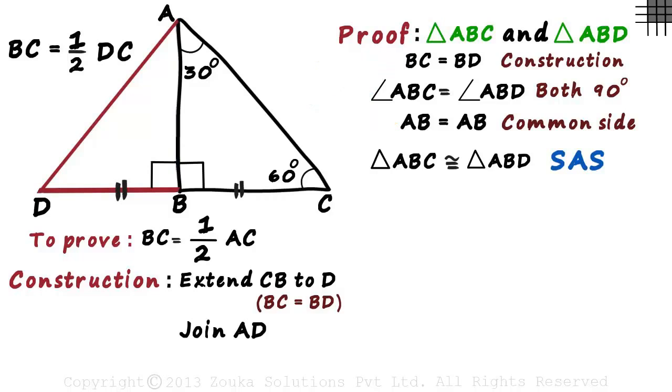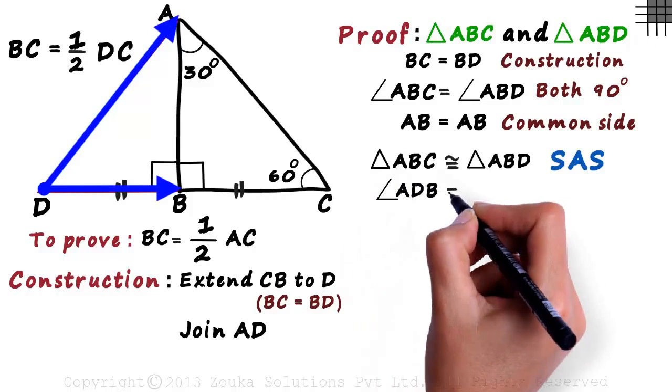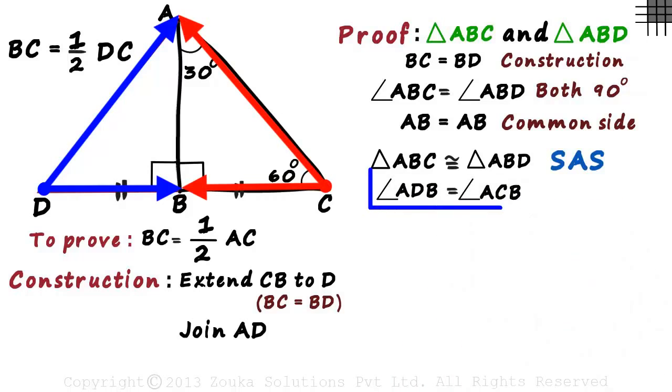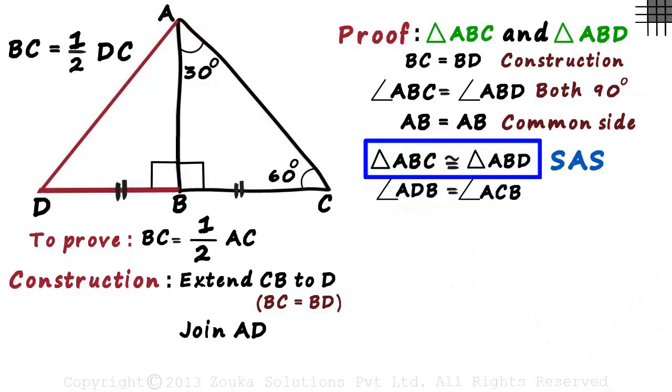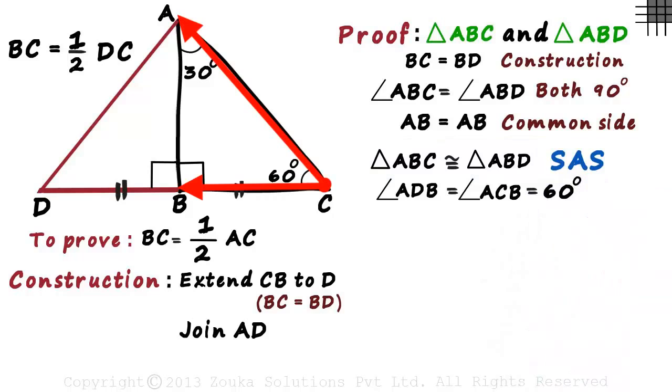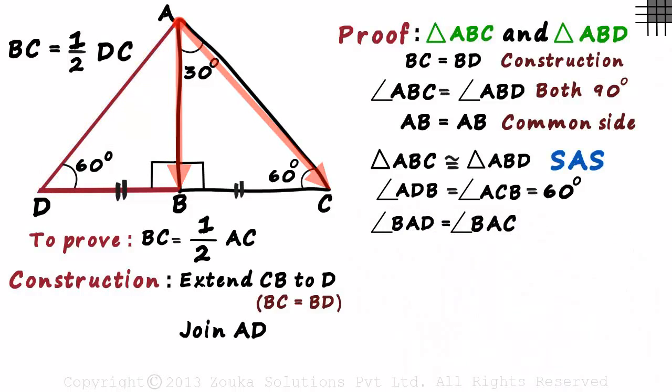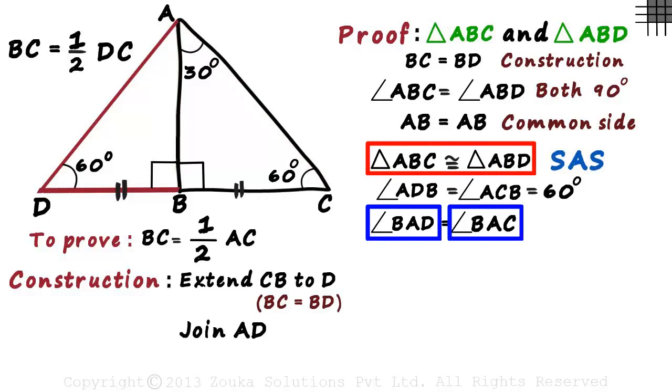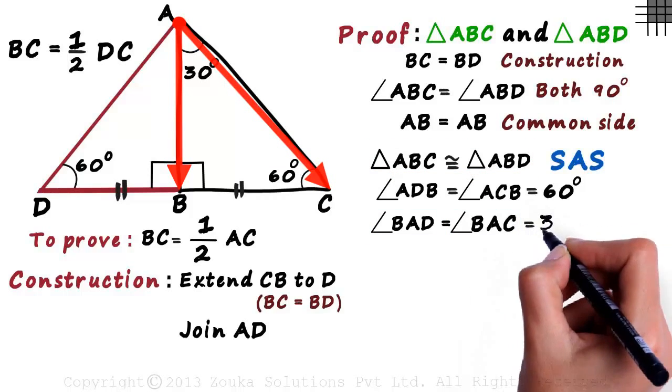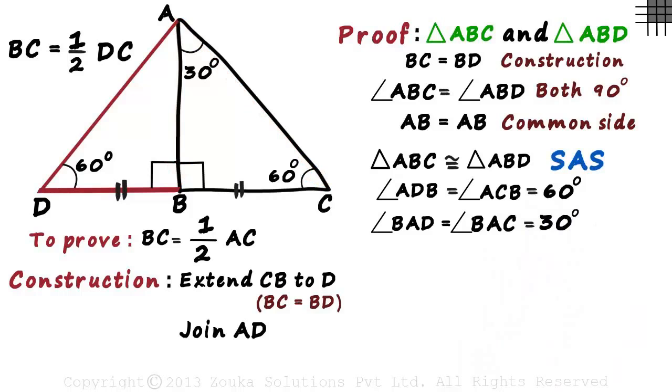The corresponding parts of congruent triangles are always congruent. Angle ADB is equal to angle ACB as they are corresponding angles of congruent triangles. But we are given that angle ACB is 60 degrees. It implies that angle ADB will also be 60 degrees. Angle BAD will also be equal to angle BAC as they are corresponding angles of congruent triangles. And angle BAC is given as 30 degrees, which is why angle BAD will also equal 30 degrees.